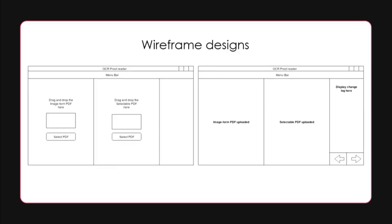The initial wireframes look like this. We have a select PDF option and also a drag-and-drop area where we can drag and drop our PDFs. After uploading, the two PDFs would be displayed side by side, with a space for the change log and two buttons to toggle between the changes.